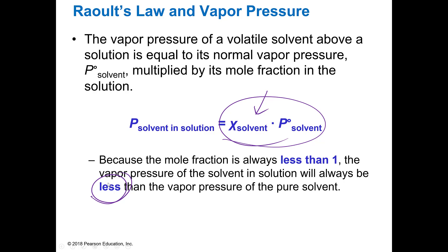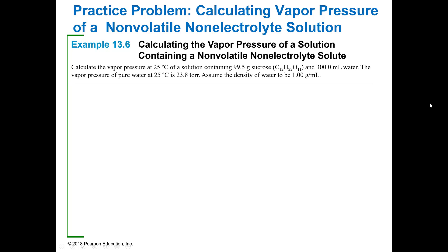We're going to use Raoult's Law, which is pretty much what this is, though there's a version that's a little more complex. The first colligative property we're going to do calculations on is vapor pressure. To calculate the vapor pressure of a solution with a non-volatile solute, we look at the original vapor pressure and see what the impact is — remember, we're trying to decrease how quickly something vaporizes or evaporates.